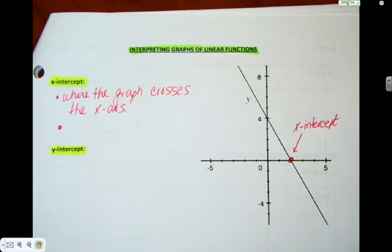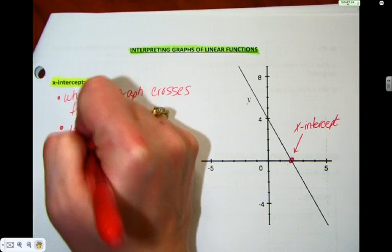The reason this is such a special point is because wherever it crosses the x-axis, we know the y-coordinate. What's the y-coordinate of any point on the x-axis? Zero. So it's where y equals zero.